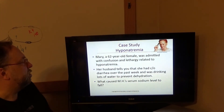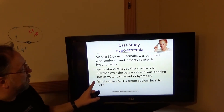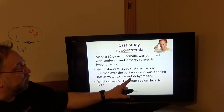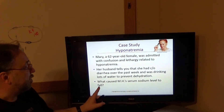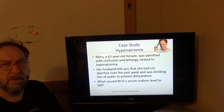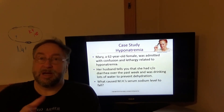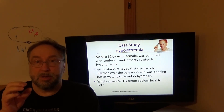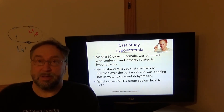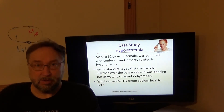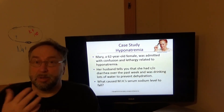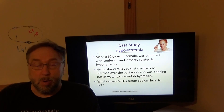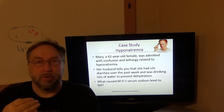Case study: Mary is a 62-year-old female admitted with confusion and lethargy related to hyponatremia. Her husband reports she had diarrhea over the past week and was drinking a lot of water to prevent dehydration. She lost isotonic body fluid containing sodium and electrolytes through diarrhea, but replaced it with hypotonic fluid — plain water — resulting in a low concentration of sodium.